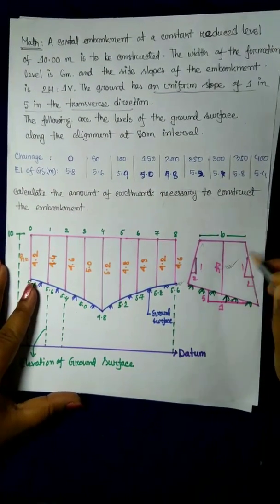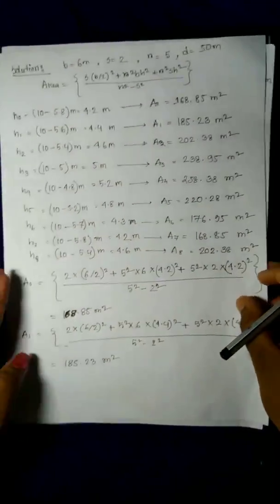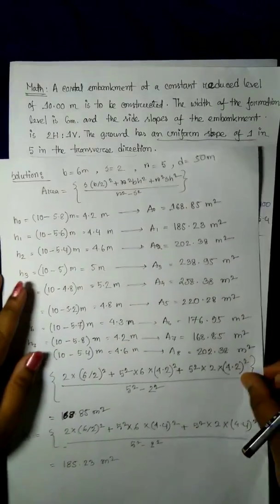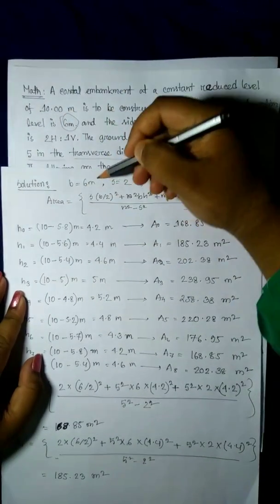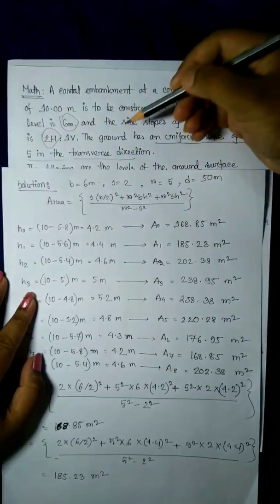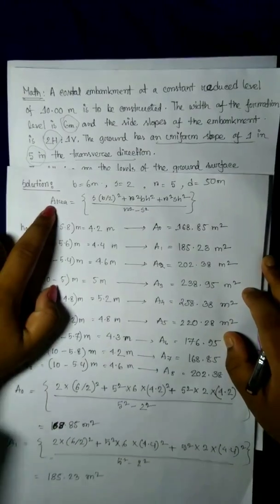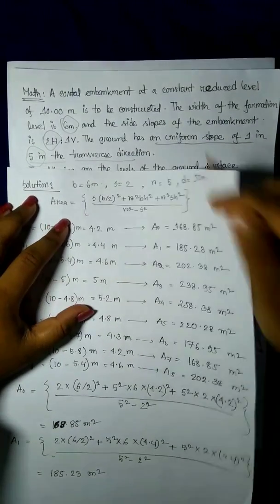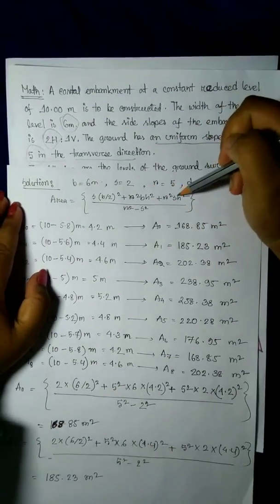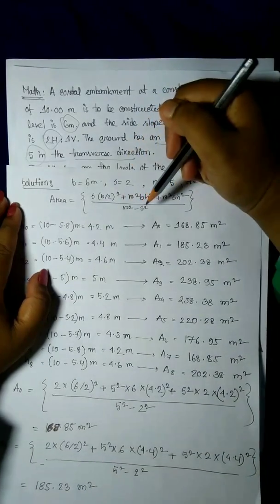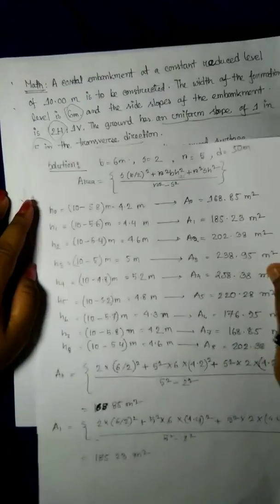This is the two-level section. The cross-sectional area formula is: A equals the square root of s times (b/2) squared plus r squared, times (b times hr) squared plus r squared, times h squared, divided by (r squared minus s squared). The formation level width b is 6 meters, s equals 2, and r equals 5.